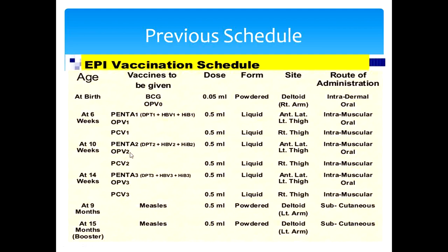At 10 weeks: Penta2 — DPT 2nd dose, hepatitis B 2nd dose, Haemophilus influenzae type B 2nd dose — 0.5 ml intramuscularly in the anterolateral left thigh. Pneumococcal vaccine 2nd dose — 0.5 ml in the right thigh intramuscularly. OPV2 — 2 oral drops. Rotavirus 2nd dose is also given orally at 10 weeks.